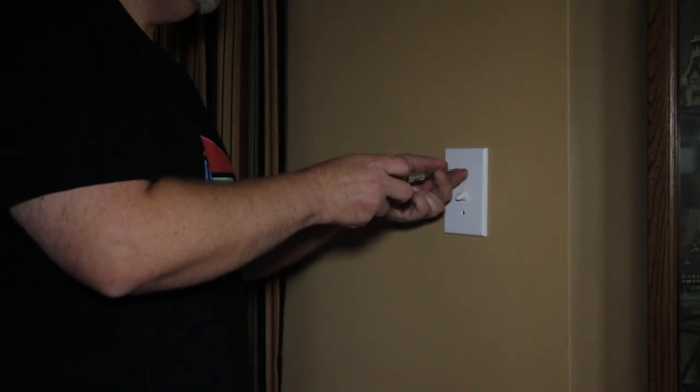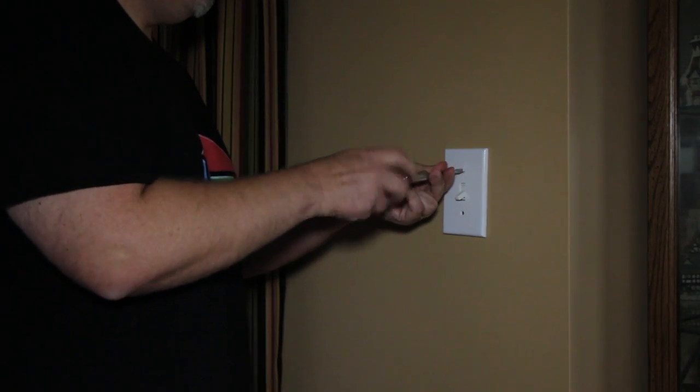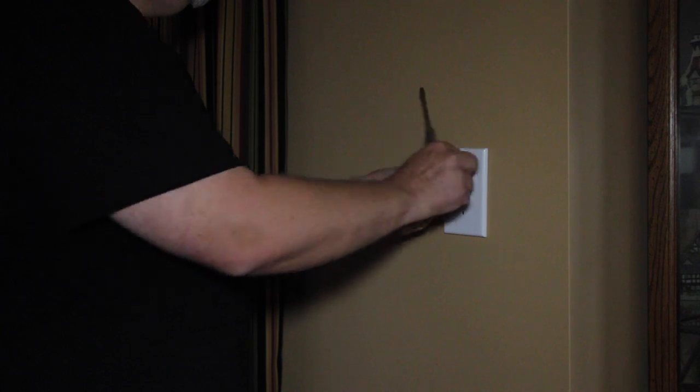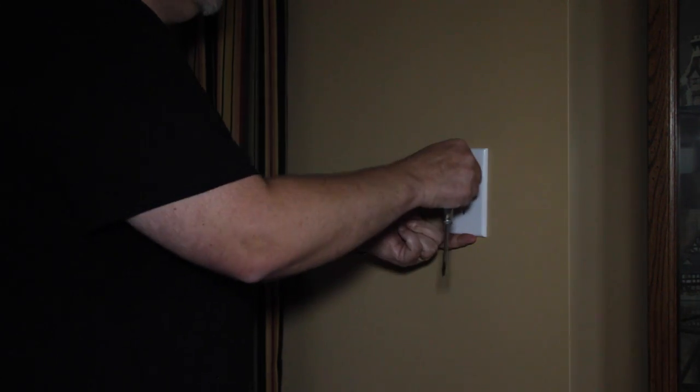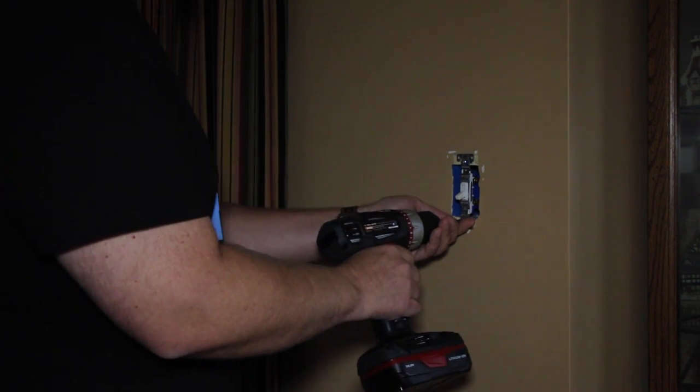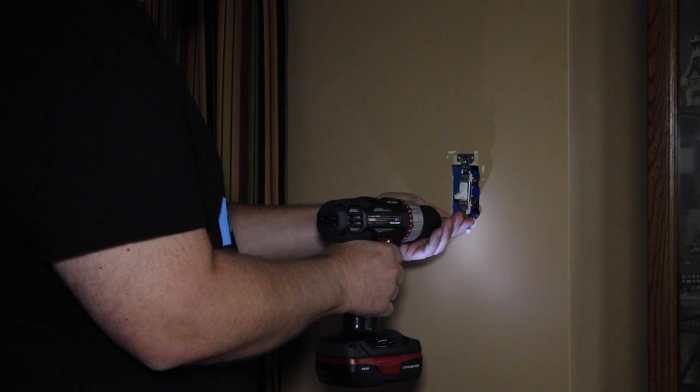The Insteon keypad dimmer is much more than a normal dimmer switch. It allows this light to be controlled from other keypads in my house as well as my smartphone, my Apple Watch, motion sensors, open and close sensors, just to name a few.